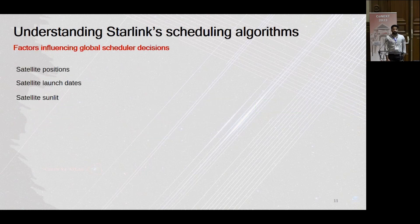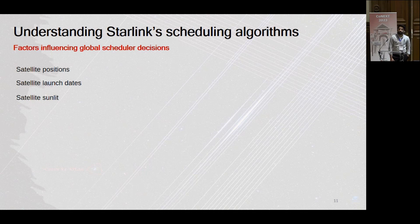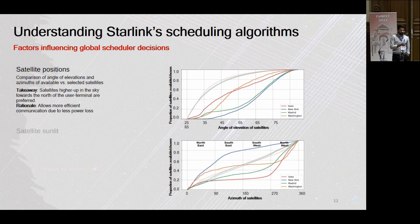Now that we have the satellites we're connected to during any given 15-second slot, we wanted to see what factors influence Starlink's global scheduling decisions. For this work we only looked at publicly available data — satellite positions, their launch dates, and their sunlit status. In this talk I'll focus on satellite positions and sunlit status.